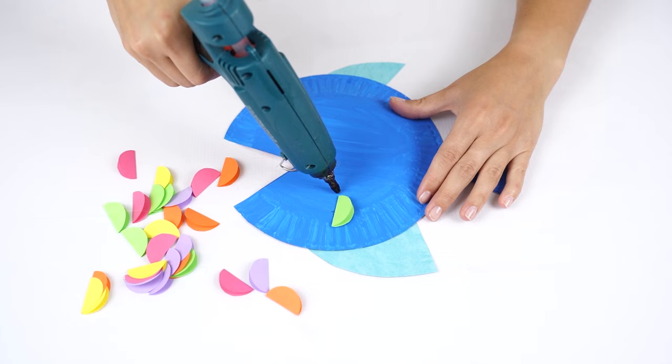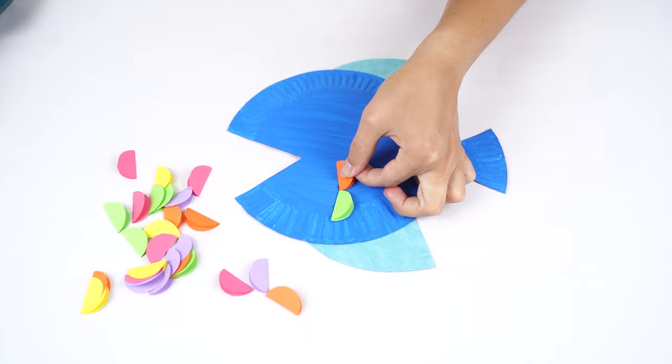Then, put another dab of glue next to that scale, and paste the scale in another color. Repeat until the first row has five scales.